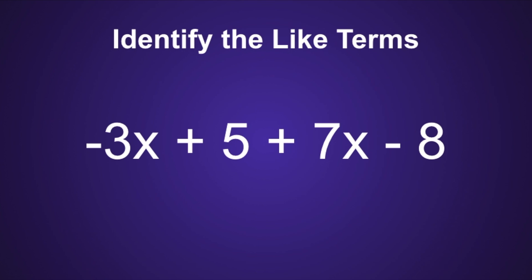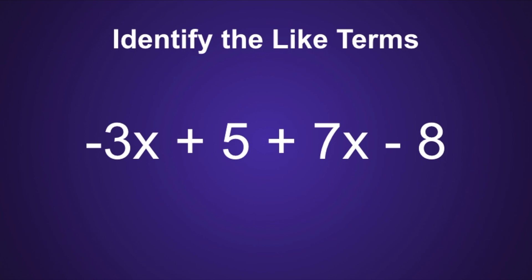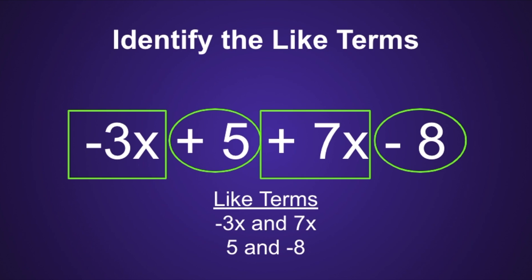Now I want you to practice one. In the expression negative 3x plus 5 plus 7x minus 8, I want you to determine the like terms. I recommend you pause the video now, and then resume when you're ready to see if your like terms are correct. In the expression negative 3x plus 5 plus 7x minus 8, the like terms would be negative 3x and 7x, and 5 and negative 8. Notice how I included the signs in front of the constants — for instance, instead of just positive 8, I included the minus sign so that I knew it was negative 8.